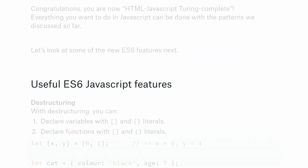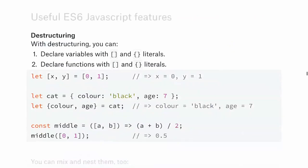What are some useful ES6 / ECMAScript 2015 features already supported by most browsers? First, there's destructuring, which lets you declare variables using array or object literals. Instead of assigning variables one at a time, you can write something like 'let [x, y] = [0, 1]' — a shorthand for 'let x = 0, y = 1'. If the lengths don't match, you'll get the first values and the rest will be undefined.